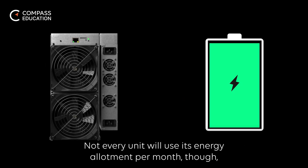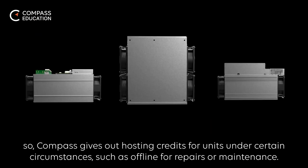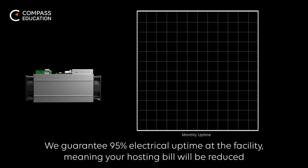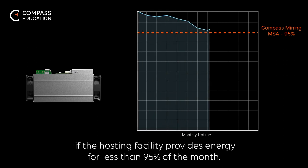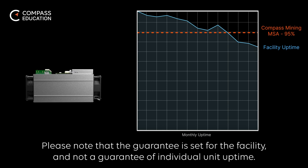Not every unit will use its energy allotment per month, so Compass gives out hosting credits for units under certain circumstances, such as being offline for repairs or maintenance. We guarantee 95% electrical uptime at the facility, meaning your hosting bill will be reduced if the hosting facility provides energy for less than 95% of the month.